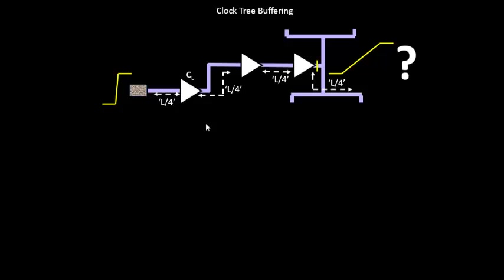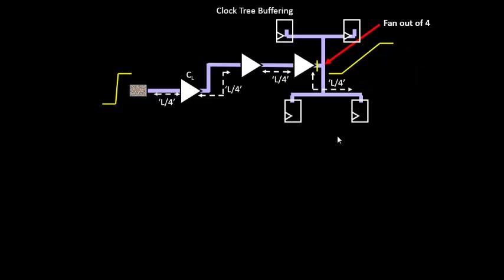Any ideas why this happens? The reason is that from the last buffer, you still have L/4 of wire going to the endpoint, but the endpoint sees all four L/4 segments combined — that is 4 × L/4 = L. So you are back to basics from that point. You also have a fan-out of 4, and in the circuit we had a fan-out of 4 from the endpoint to the wire endpoint. That is why you see a bad transition waveform at the final output.